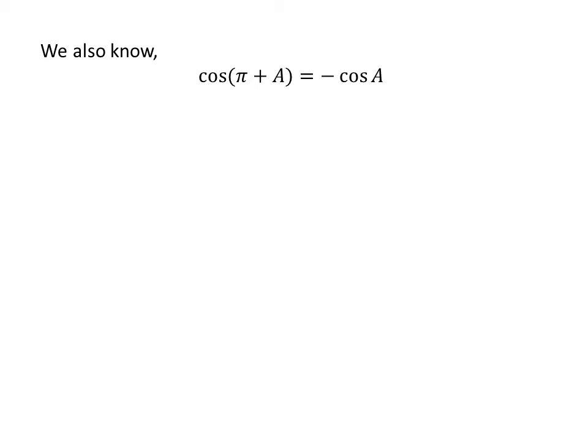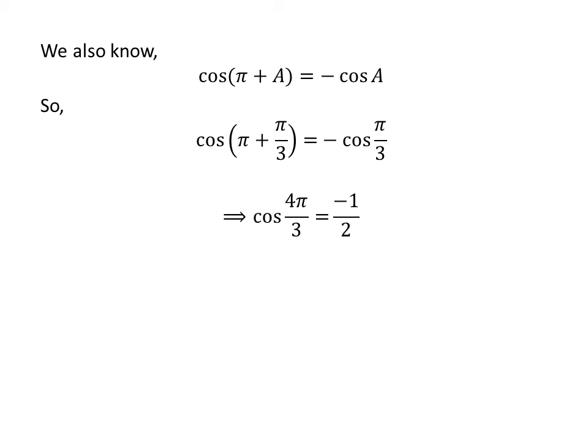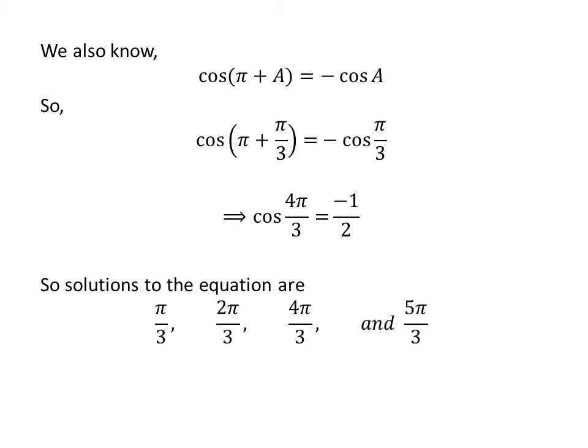Using the identity cosine(π + a) = −cosine(a) and applying it similarly, we get cosine(4π/3) = −1/2. Therefore, the solutions to sin²x = 3cos²x in the interval 0 to 2π are π/3, 2π/3, 4π/3, and 5π/3.